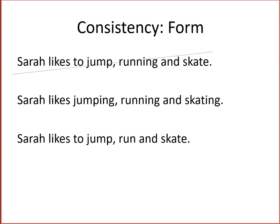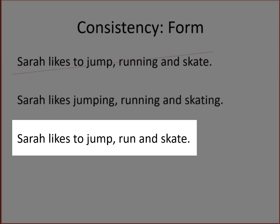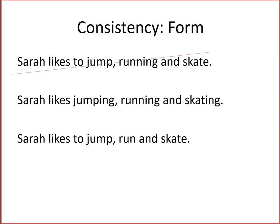Here I've got two ways to fix the sentence. Notice the consistency of the use of the form of the words. In this example, we use the present continuous tense — each of the words ends in "-ing". For the other list, it makes sense to put "to" in front of each of them: to jump, to run, to skate.